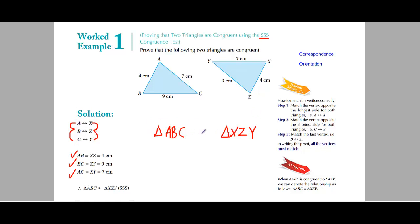This is how we write the triangle names. For congruency, we use this symbol — three lines — which is the symbol for congruency. It means triangle ABC is congruent to triangle XZY. At the end, you should mention which test you have used to prove that the two triangles are congruent. With the help of the SSS test, we have proved that these two triangles are congruent.